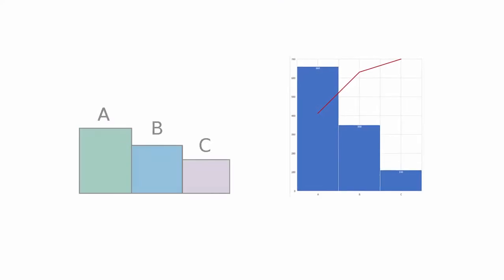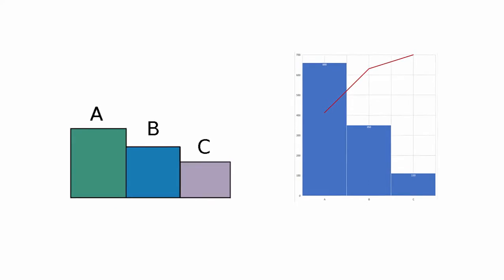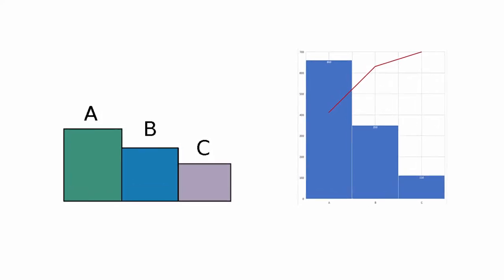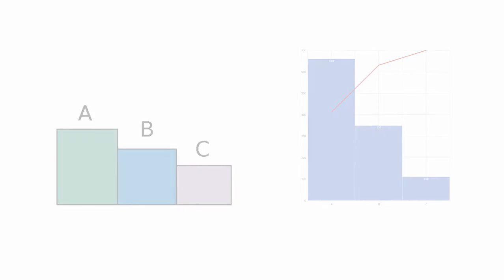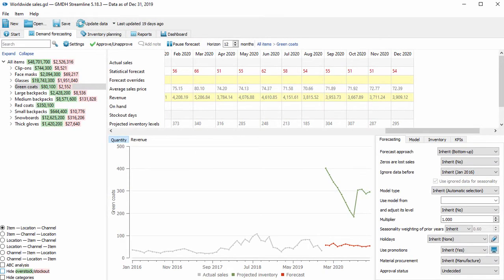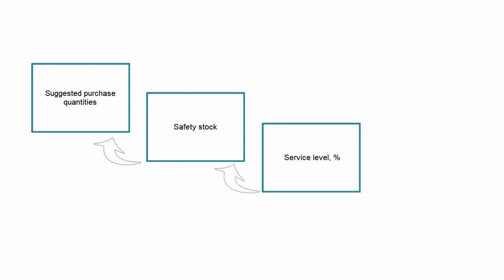It's no secret that most planners use the ABC approach for analytic and decision-making processes, normally ranking items by saleability and profitability. In Streamline, you can drive your purchasing process by group adjusting safety stock levels using ABC-based service level adjustment. The suggested purchase quantities partially depend on the safety stock, which is calculated based on the desired service level, which you can set based on the item's ABC class.